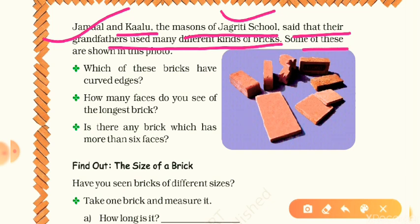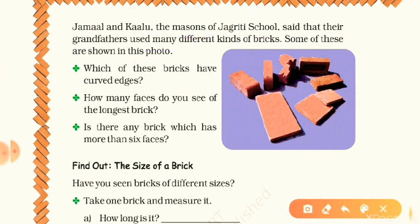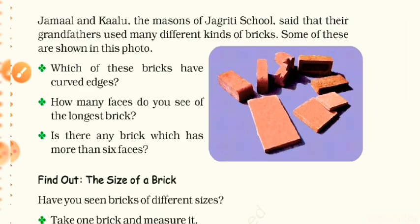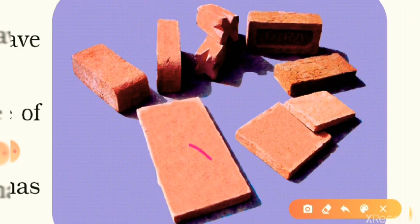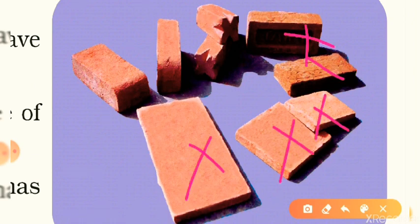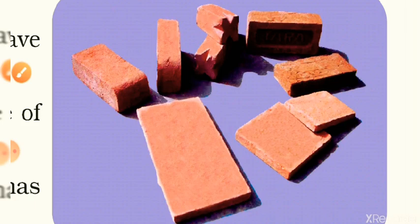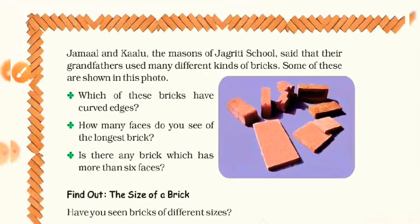Here you can see four thin bricks — first, second, third, and fourth. Which of these bricks have curved edges? Try to find them. Looking at each: this one does not have curved edges, this one also does not. Yes — in these two photos you can see the curved shapes. So you will write that two bricks have curved edges.